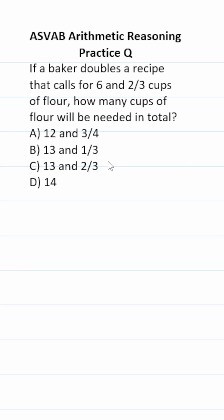For this arithmetic reasoning practice test question for the ASVAB and PyCat, we're trying to double six and two-thirds. I'm actually going to solve this one two ways. The first way is like this.